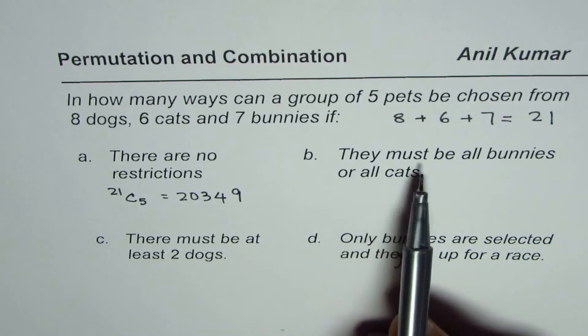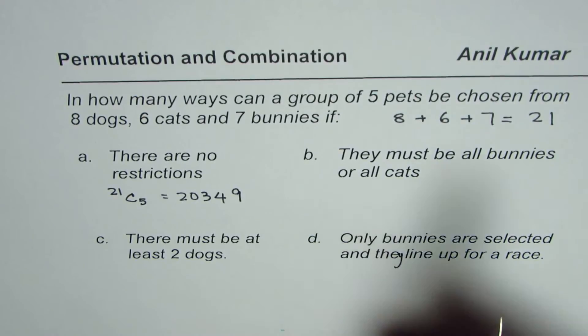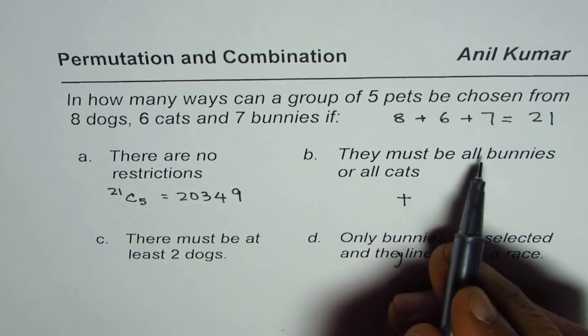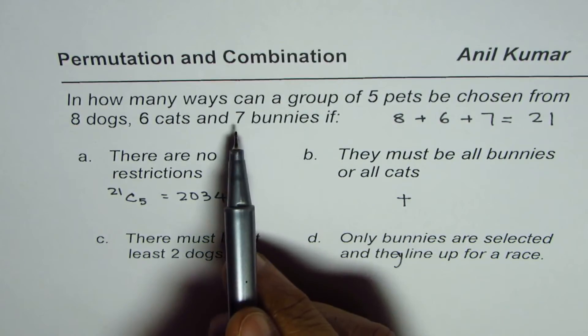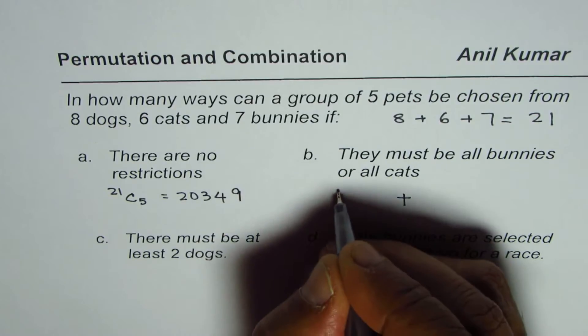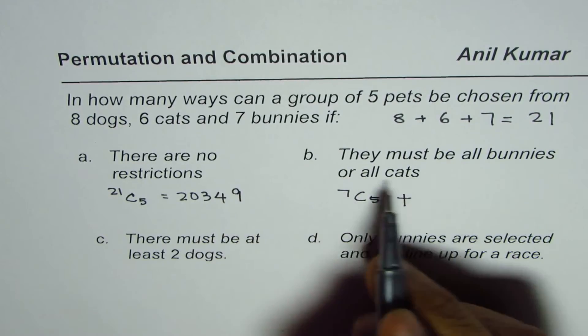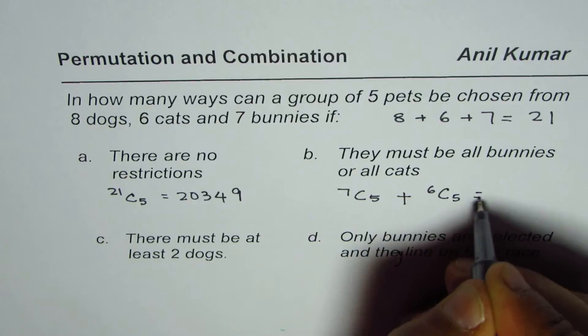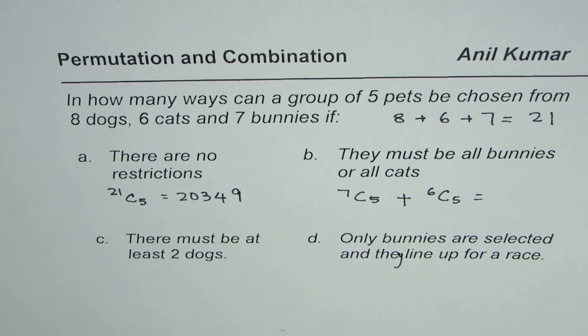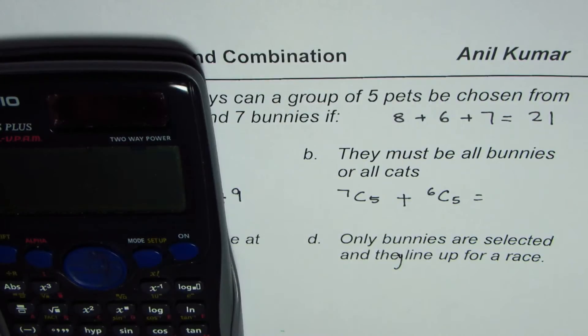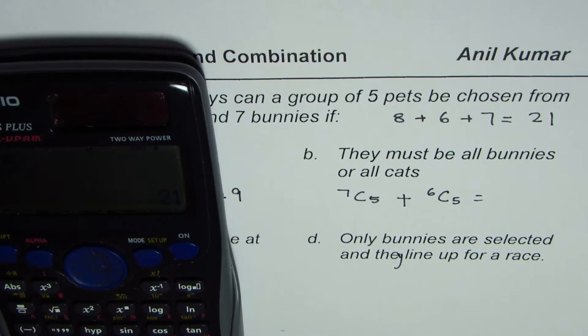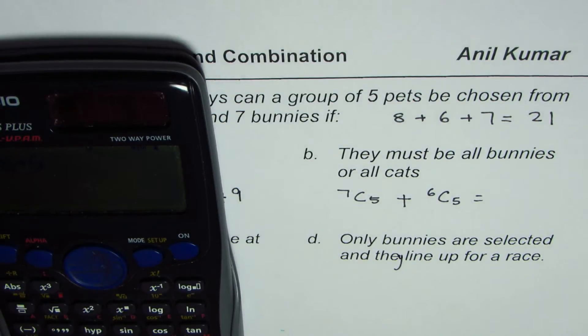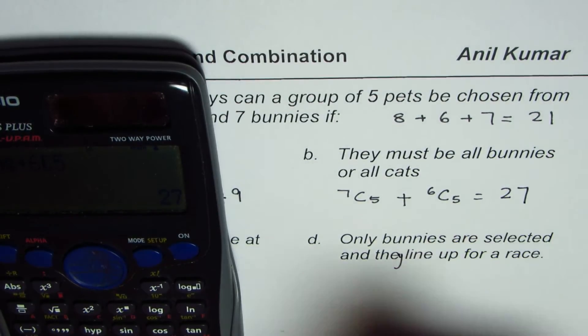The second one is they must be all bunnies or all cats. So all means you need to add up all bunnies. We are selecting 5 out of how many bunnies? Out of 7, so 7C5 plus all cats, we are selecting 5 out of 6. So 6C5. So we have 7C5 plus 6C5 and that is 27.